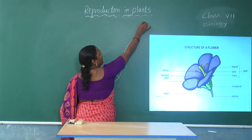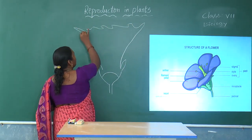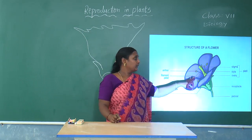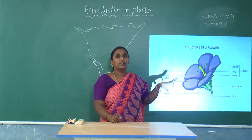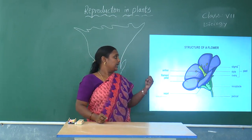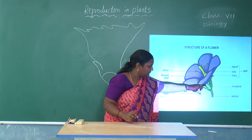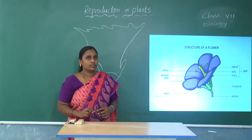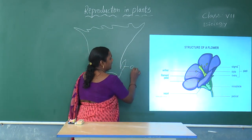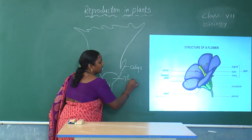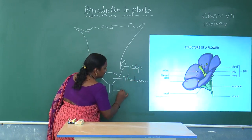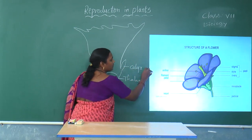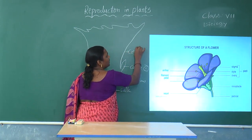The attractive part of the flower is called the corolla. The corolla gives the fragrance of the flower, and because of its bright color it helps in pollination — insects come to suck the nectar. The nectar is present near the thalamus. So the first whorl is the calyx, the swollen part is the thalamus, the stalk is the pedicel, and the second whorl is the corolla.